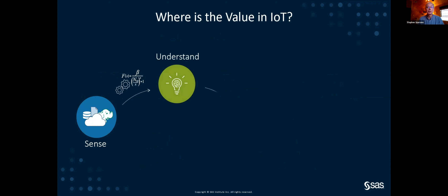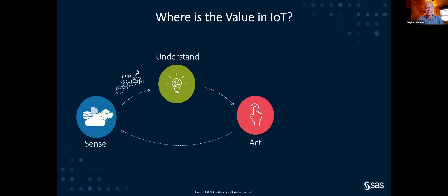Many folks ask: where's the value in the Internet of Things? It comes down to three areas: sensing, understanding, and action — acting on insights gleaned from the data we have. The sense piece is about ingesting data from different devices, things, humans, airplanes, and hospital assets.